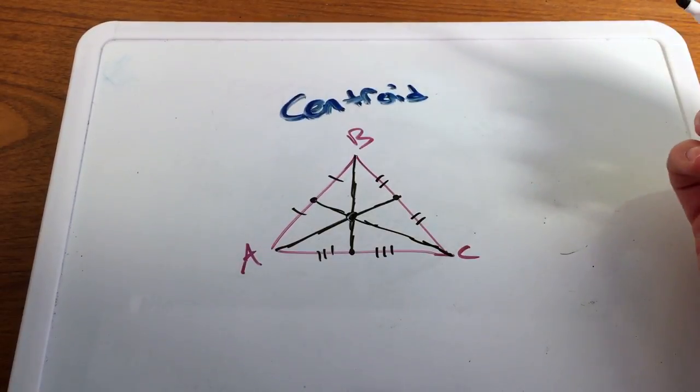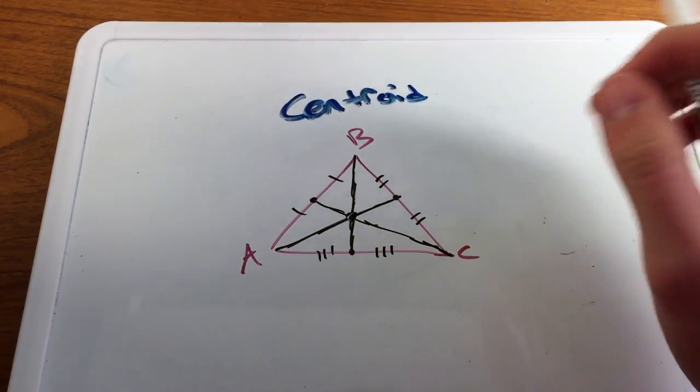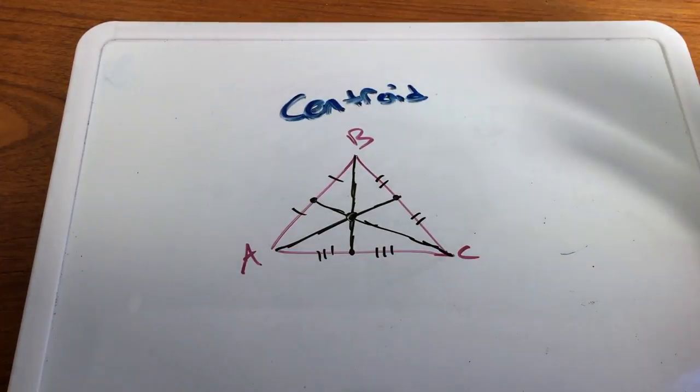So you can always make a fun little Christmas ornament out of that, where you draw a triangle, basically decorate it, and you can put a string through it and it will balance on your Christmas tree.